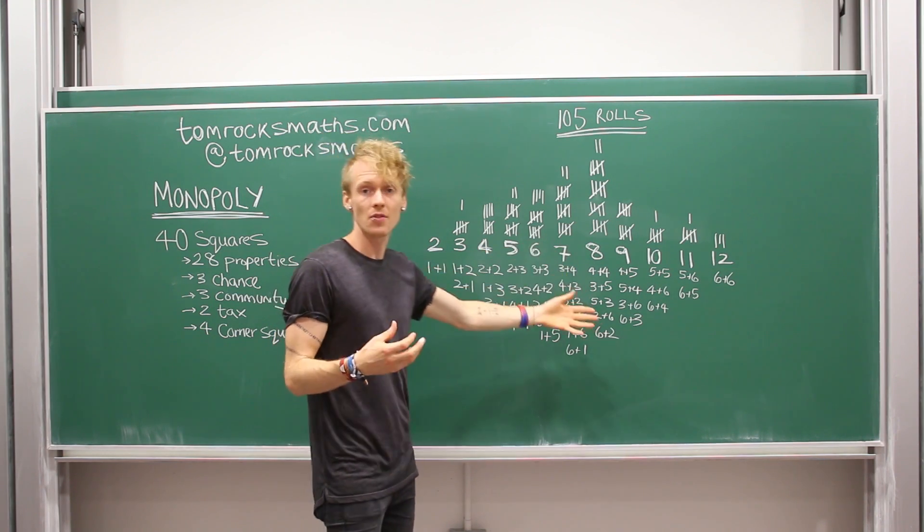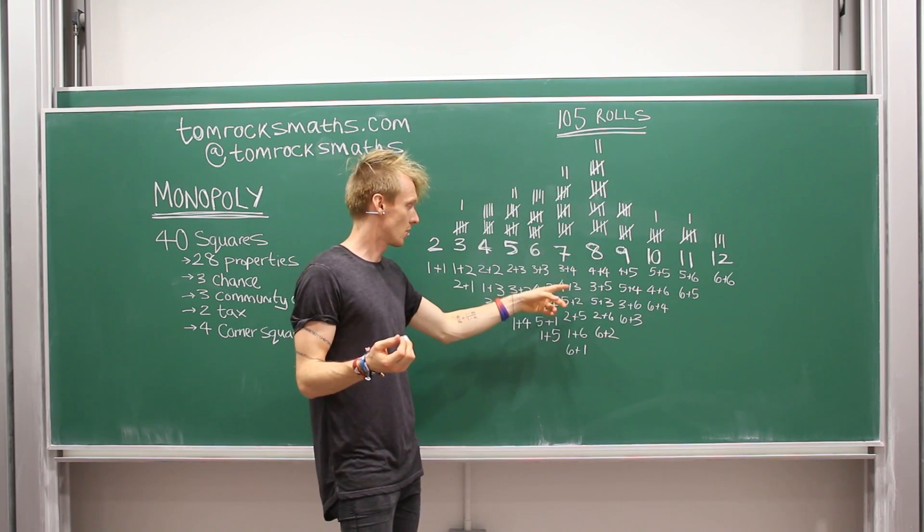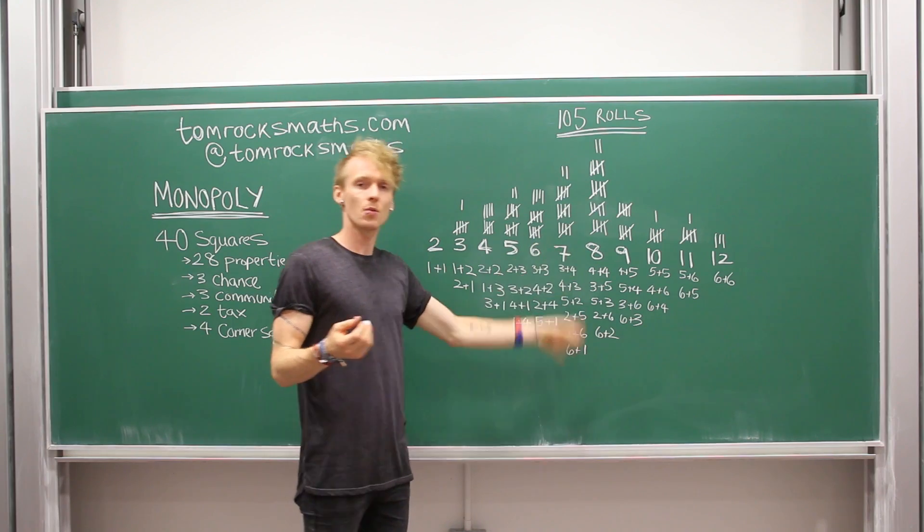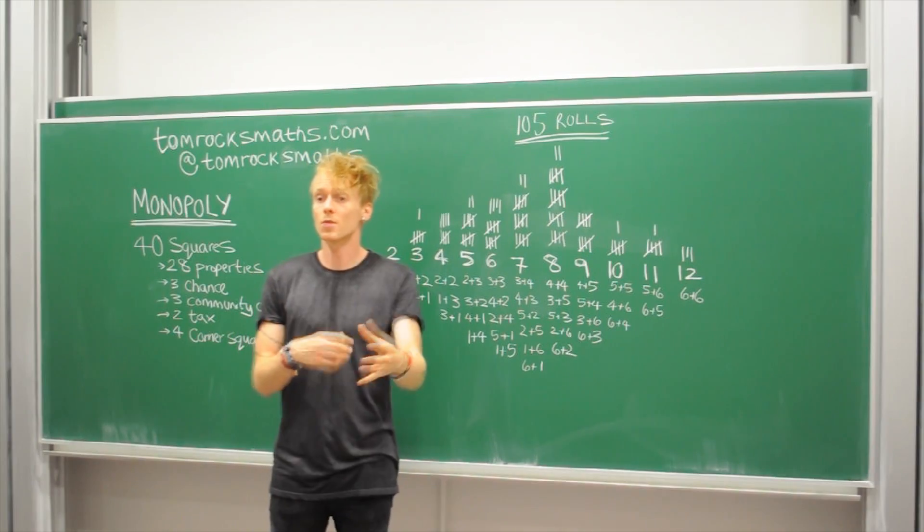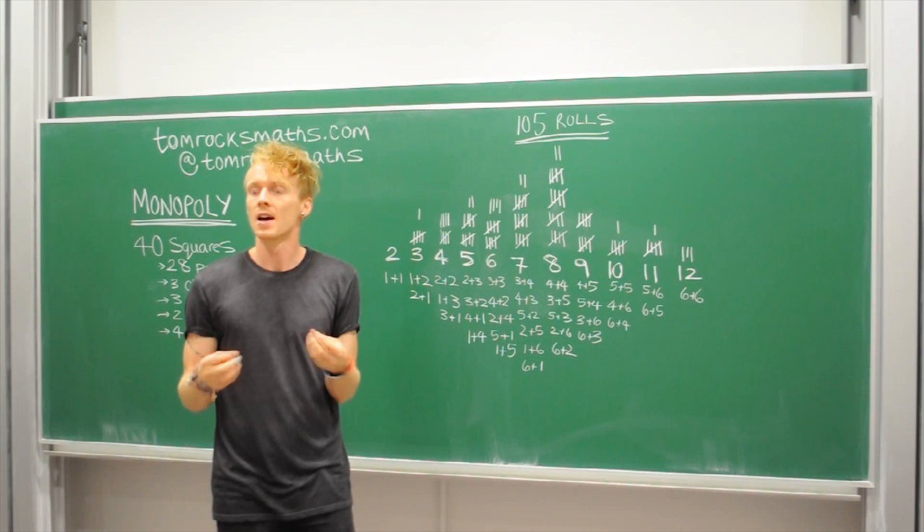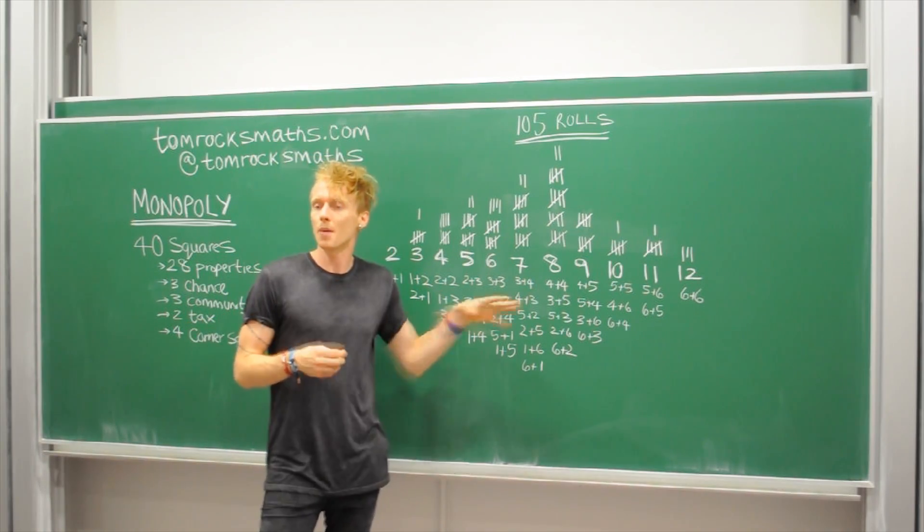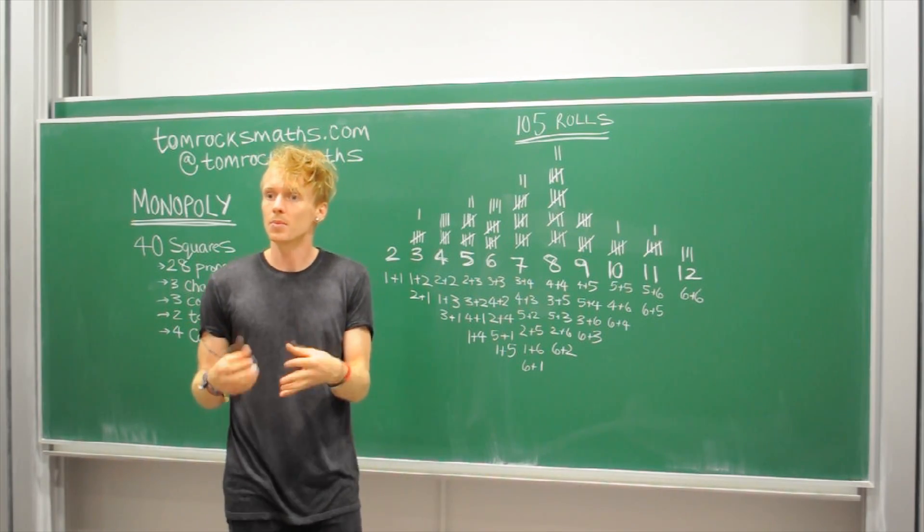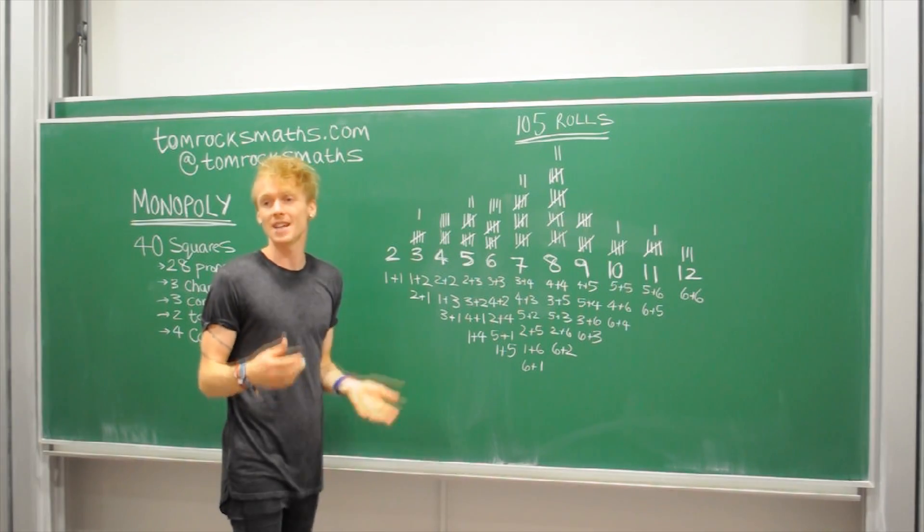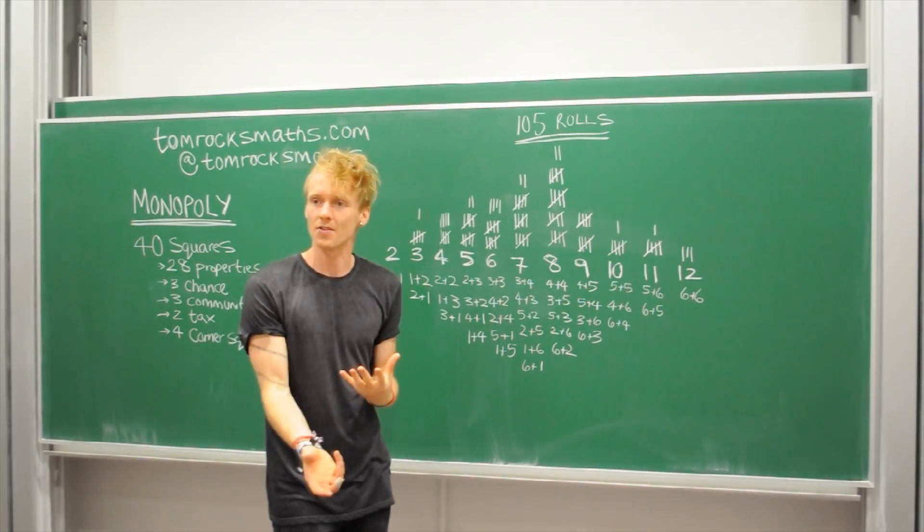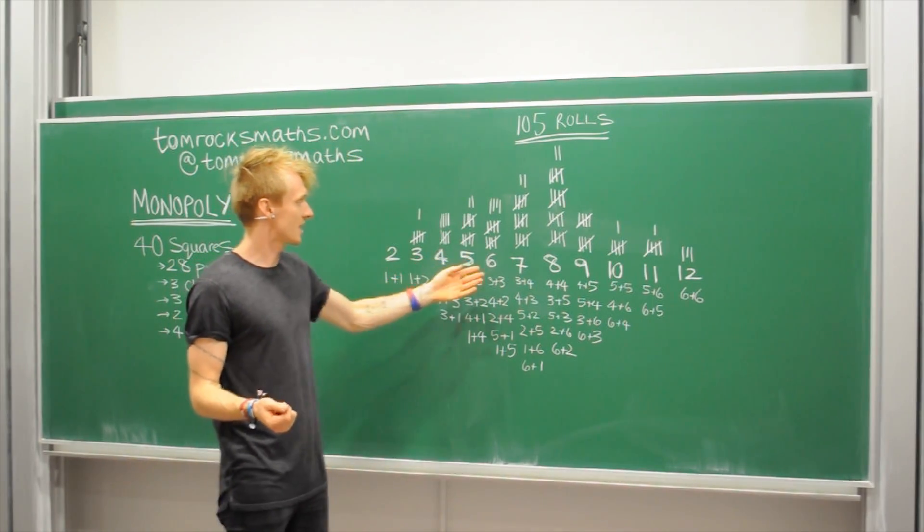Because to get a seven for example there are one, two, three, four, five, six different ways to roll a seven. And so of all the different possibilities when you roll two dice, of those 36 different combinations six of them will give you a seven. So one sixth of the time you would expect to get a seven.